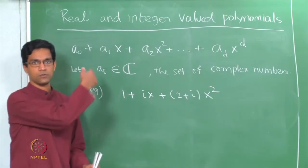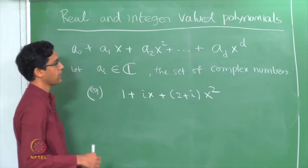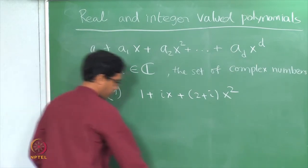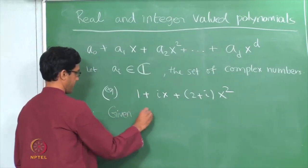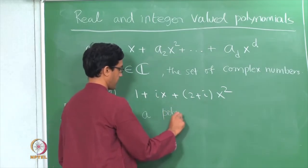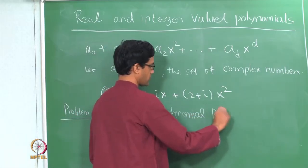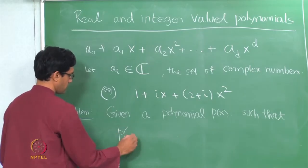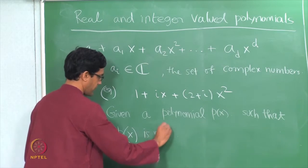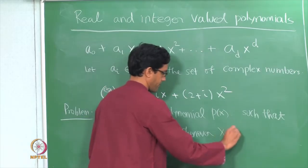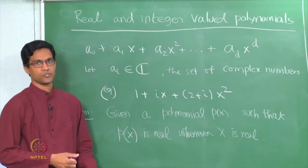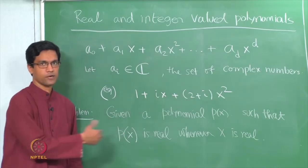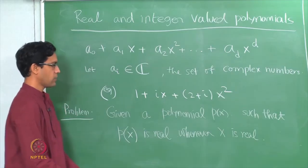Now when I said real and integer valued polynomials, let me take the first case. I want to look at real valued polynomials. Given a polynomial P of x with complex coefficients, with the additional condition that P of x is real whenever x is real — I want a polynomial which has the property that whenever I plug in a real number x, then the answer P of x is also a real number. This is what I want to call real valued polynomials: they take real values on real numbers. Then what can I say about the coefficients?